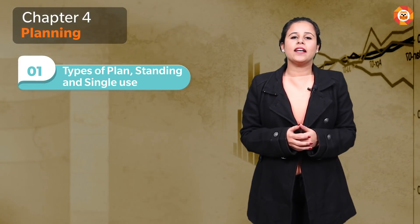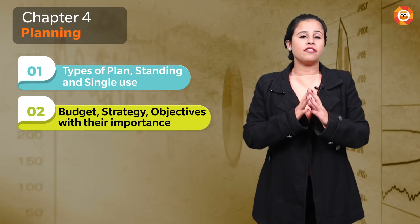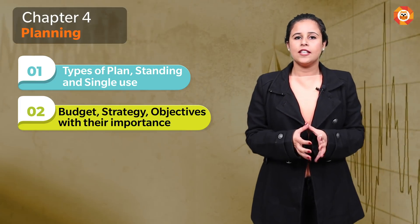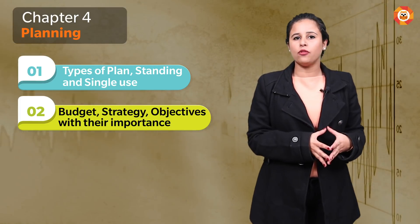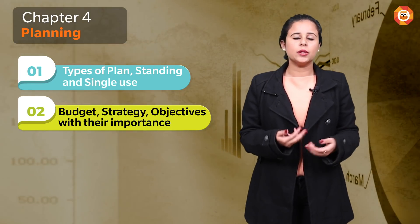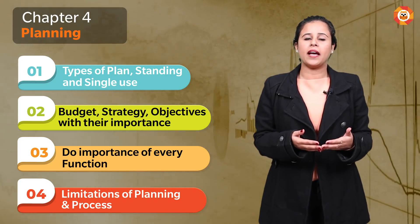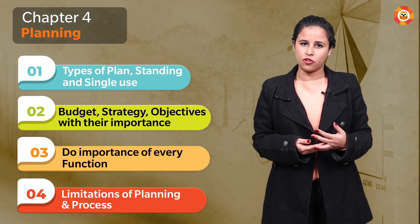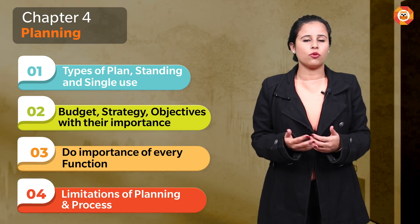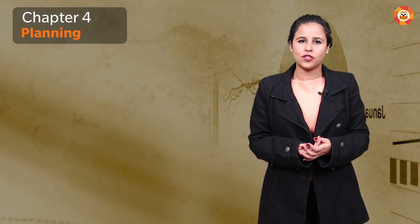Chapter 4 is Planning. Types of plan — standing and single use — and other types like budget, strategy, and objective are very very important. There is a question in the sample paper, and last year's boards also had one. You can be asked in one mark or in a case study where you identify what type of plan it is. Importance of planning and limitations of planning are also asked — why planning does not guarantee success. The process of planning is also important. The planning chapter is very small, so if you cover it you can easily score 4 to 5 marks.